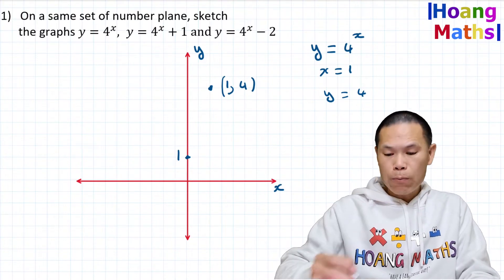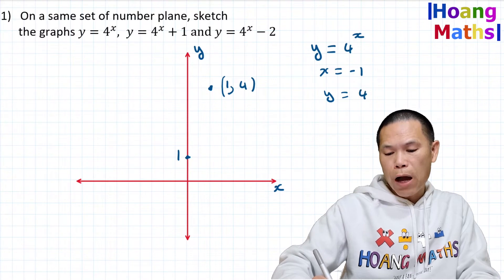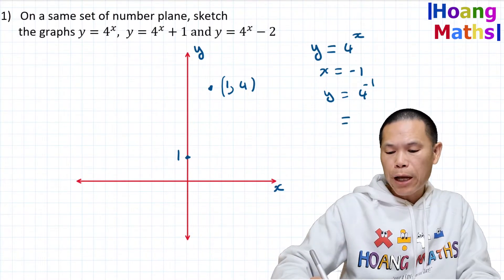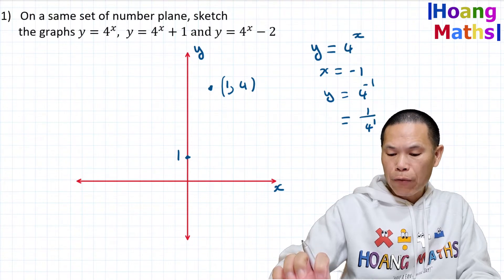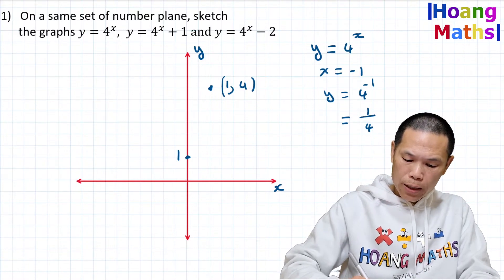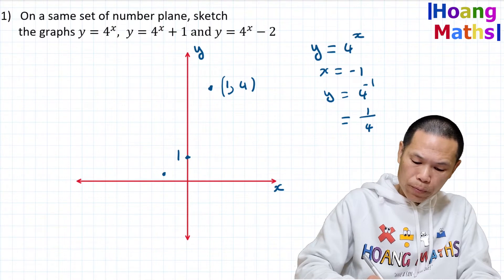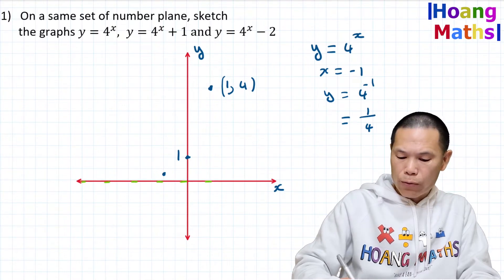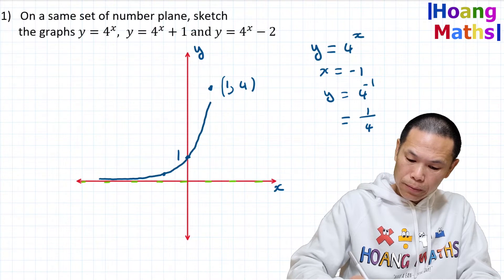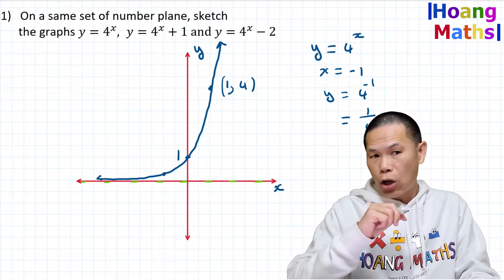When x = -1, y = 4^(-1). Because it's a negative power, we bring it down to become a positive index: 1/4^1 = 1/4. So the point is (-1, 1/4). The horizontal asymptote is y = 0. Joining the points, the graph never touches the x-axis because it is a horizontal asymptote.